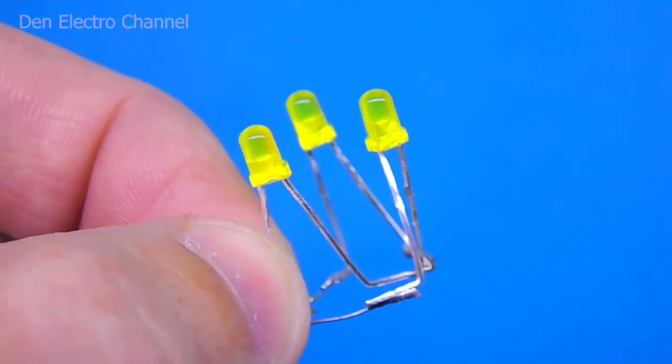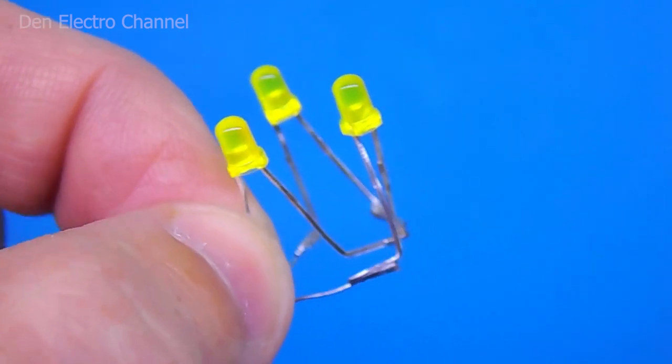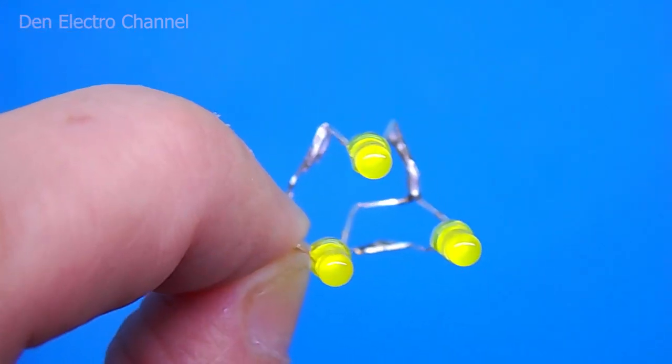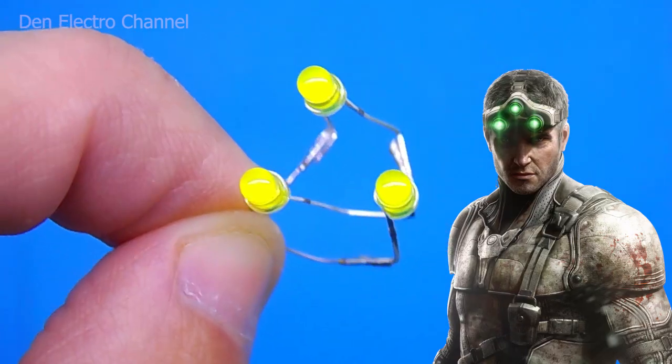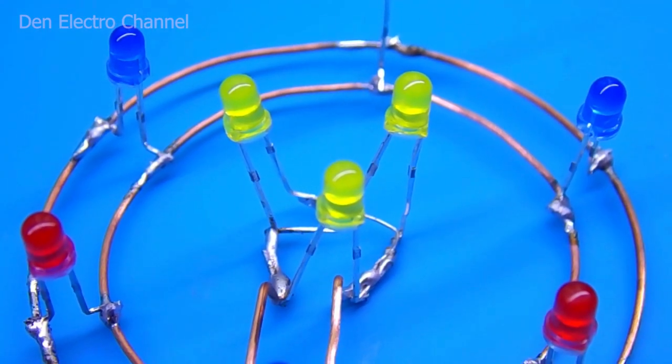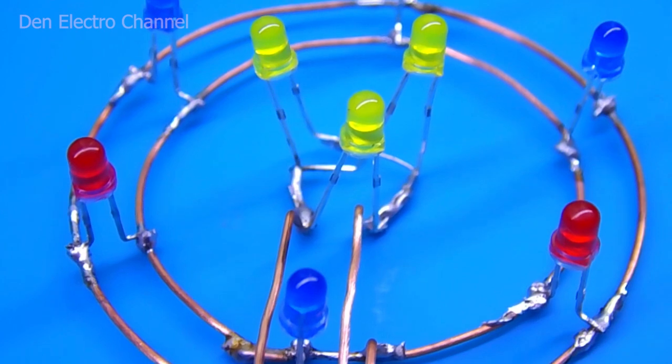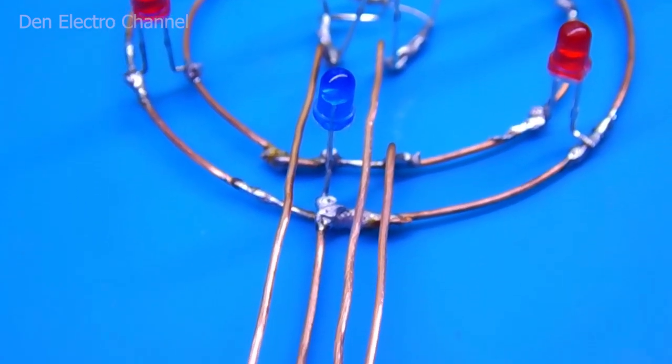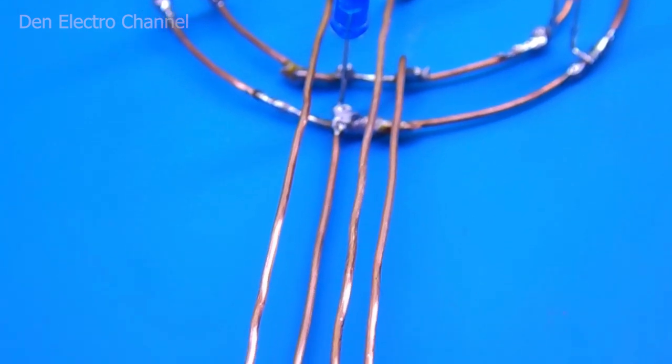We solder the yellow LEDs in parallel. We arrange them in the form of a triangle. It should look like a Sam Fisher mask. Install the yellow LEDs in the center of the circle and connect to the board. Here you need to be careful and look so that nothing closes anywhere.